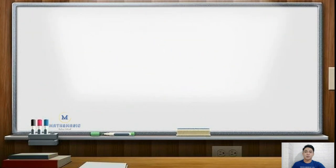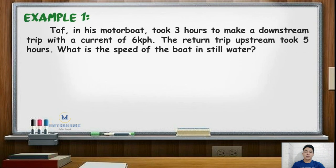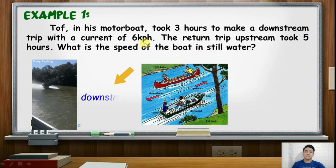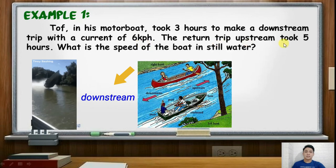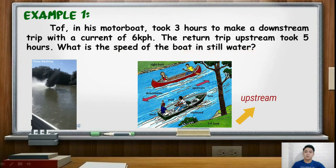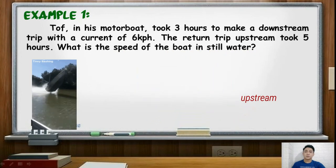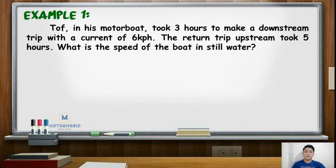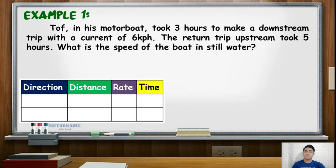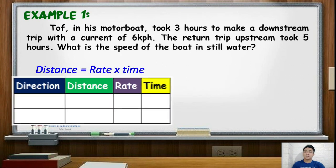For our first example, a uniform motion item: Toph, in his motorboat, took 3 hours to make a downstream trip with a current of 6 kilometers per hour. The return trip upstream took 5 hours. What is the speed of the boat in still water? When working with problems like this, it is helpful to construct a table indicating the given information. It is also important to remember the concept of distance, given by distance equals rate times time.